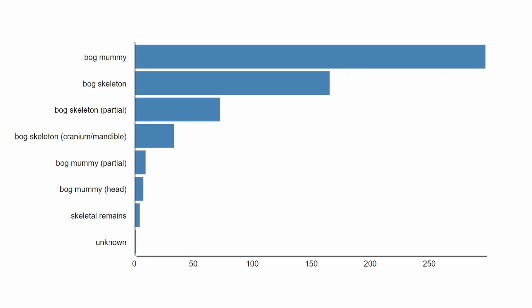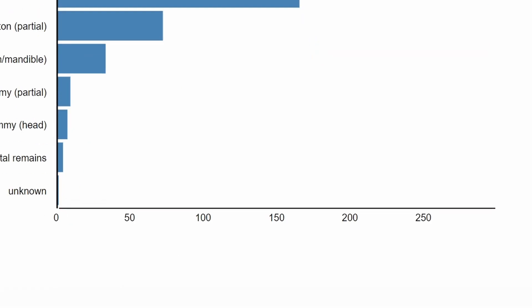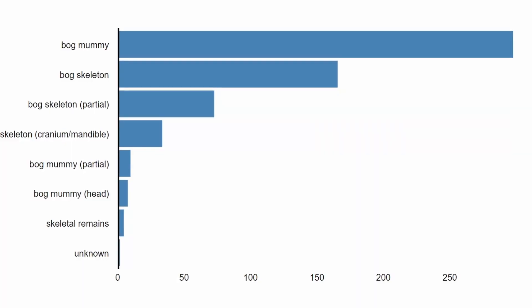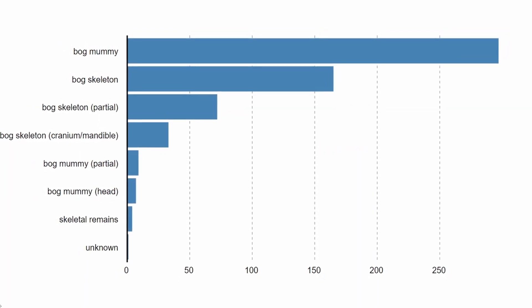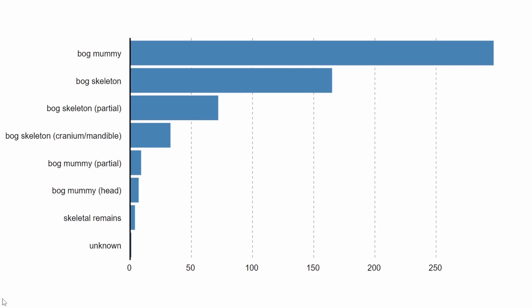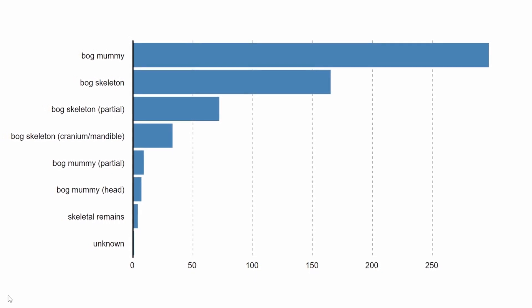We can now make additional design decisions to clarify our story and really highlight what matters most. For instance, this x-axis line down here — we don't really need it, so let's get rid of it. Once that's gone, we can add in these nice subtle dashed grid lines. This helps us compare these bars even better, and it looks quite nice too.